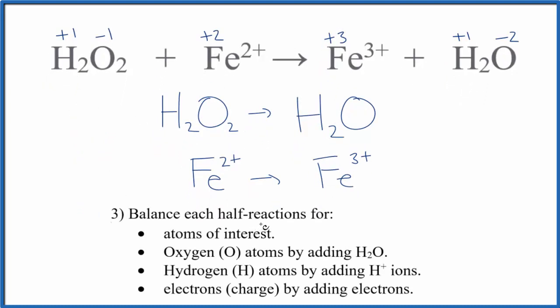Now we need to balance each half reaction. So let's first balance the atoms and we'll leave the oxygens and hydrogens until last. So up here we have oxygens and hydrogens. Down here we have iron. So everything's balanced.